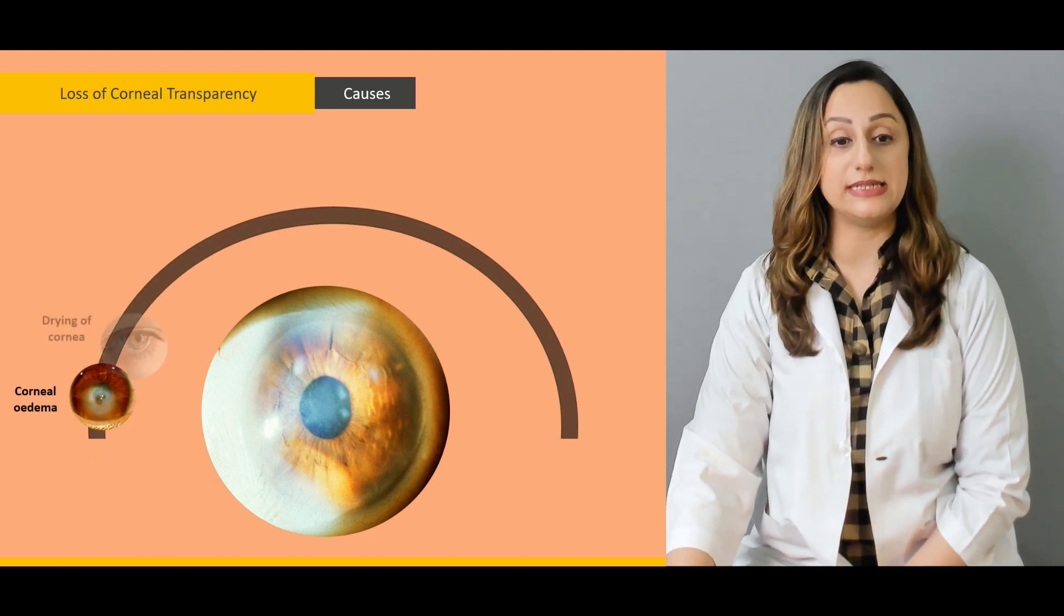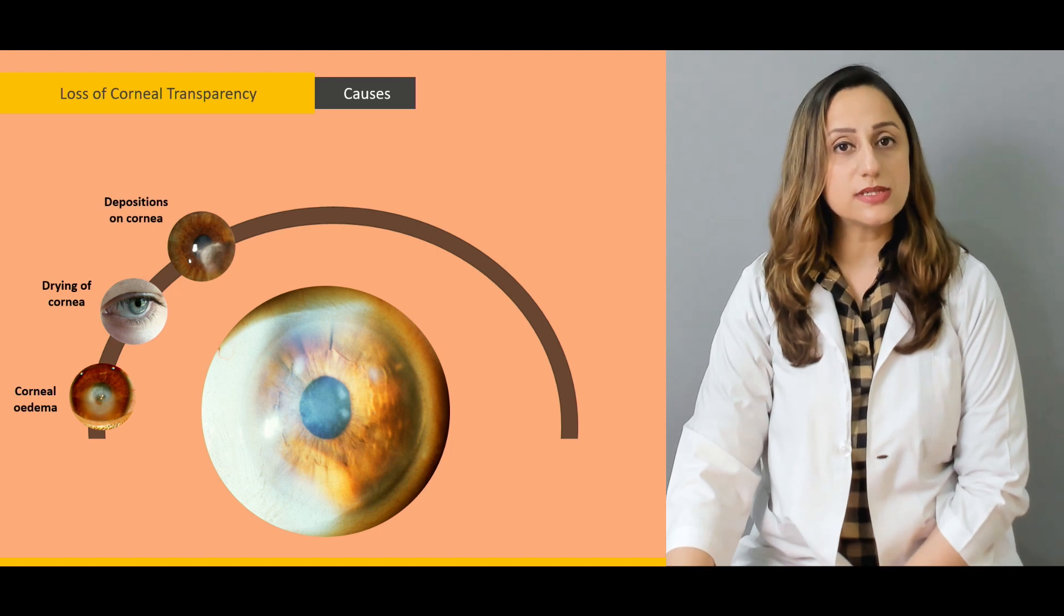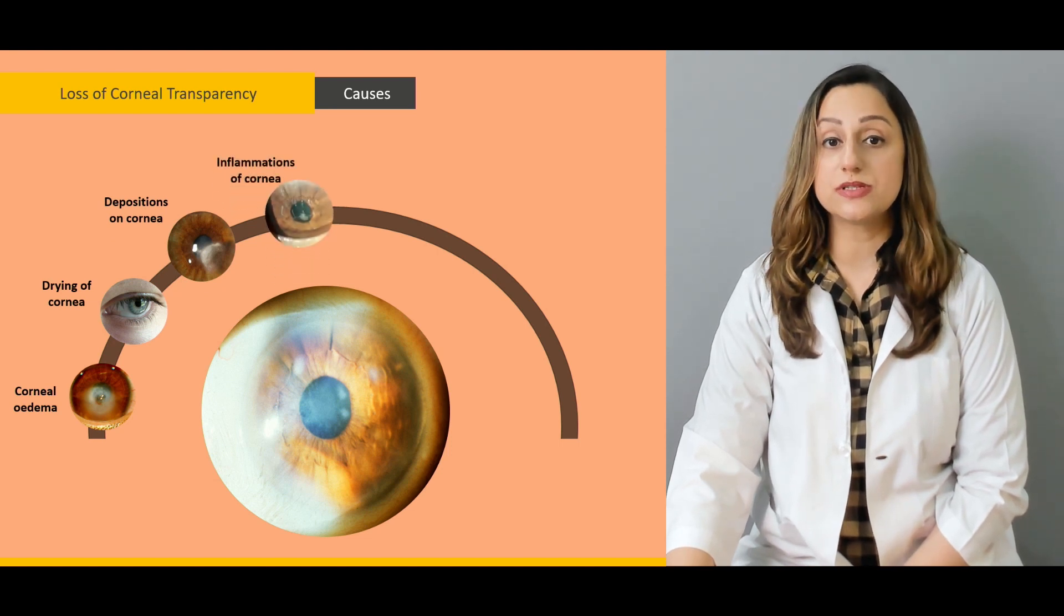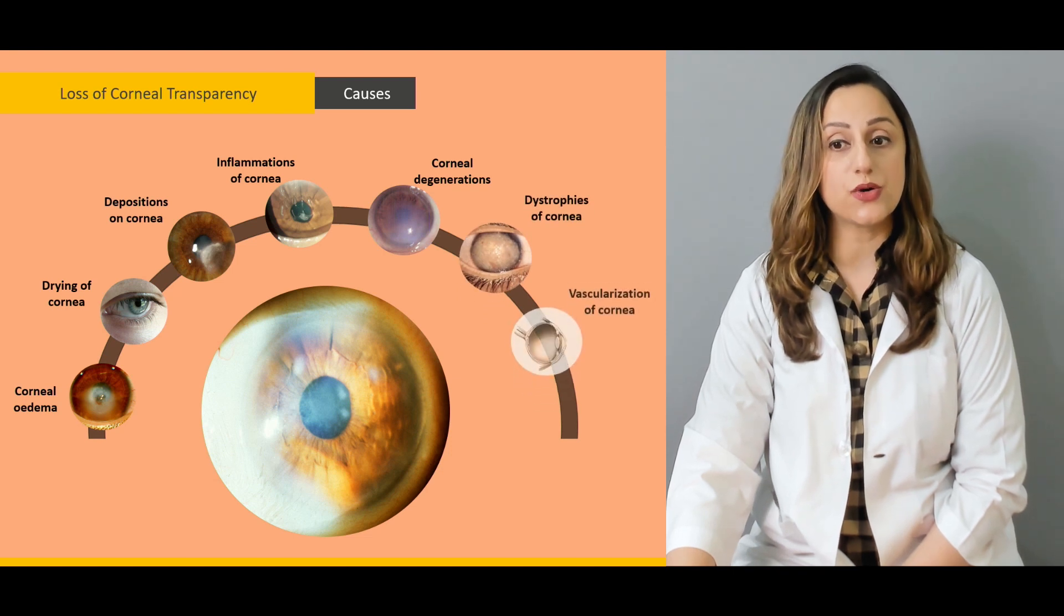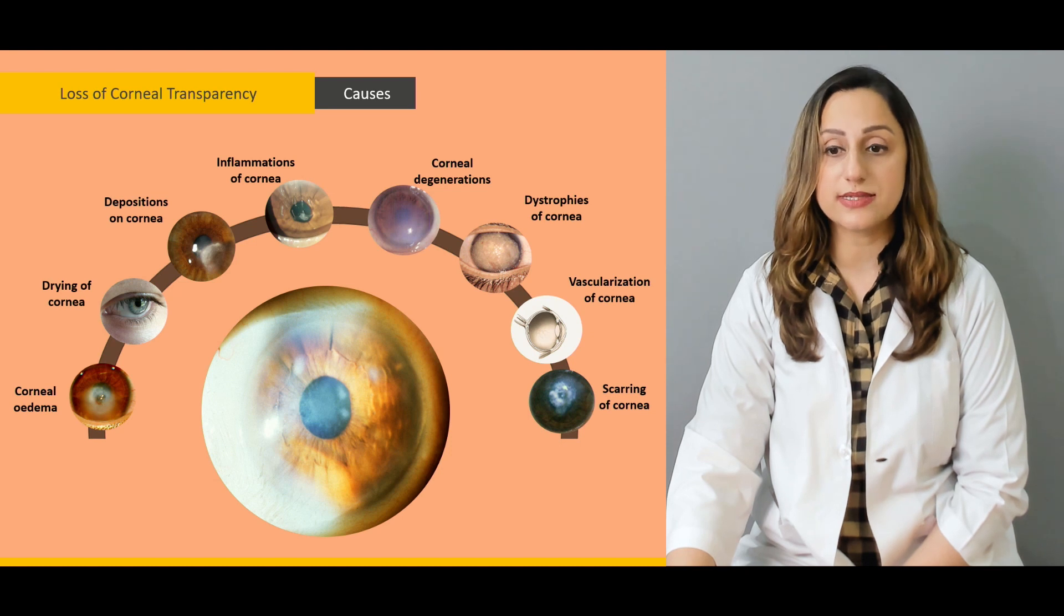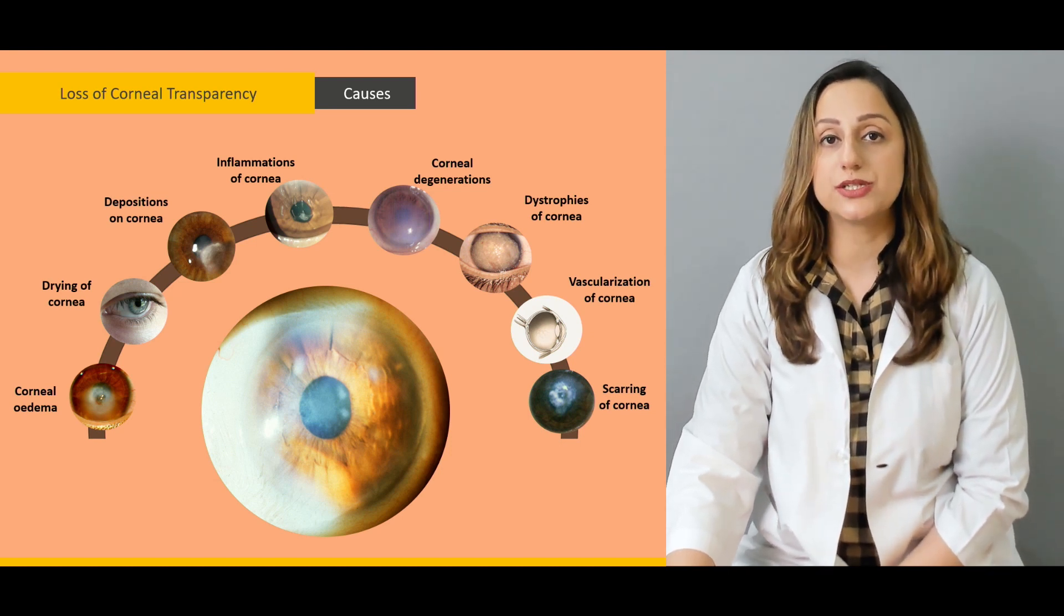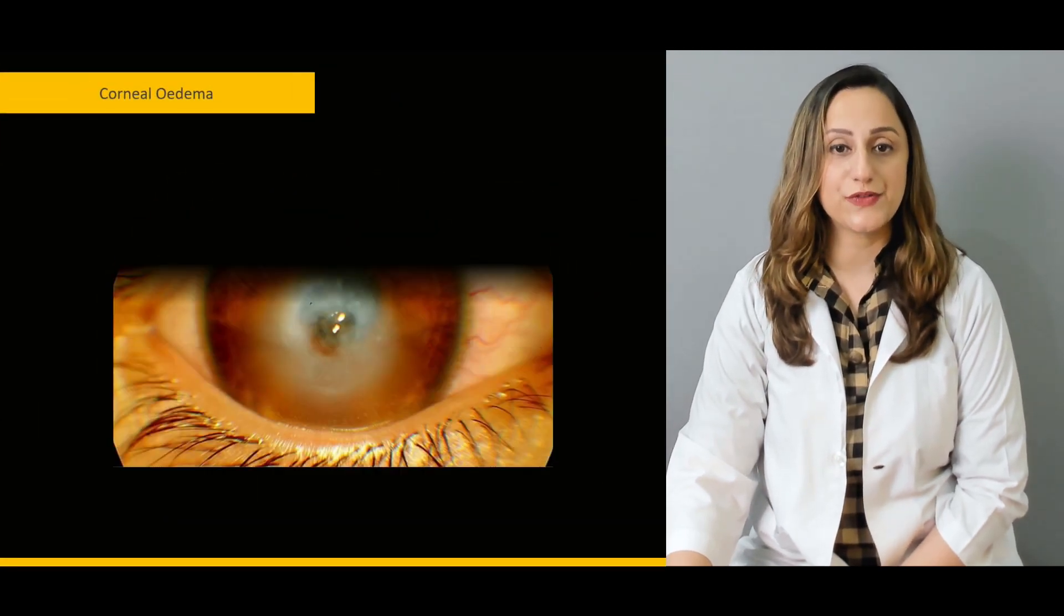It can be corneal edema, dryness of the cornea, depositions on the cornea, inflammations of the cornea, corneal degenerations, dystrophies relating to cornea, vascularization, neovascularization, as well as scarring which is related to traumatic conditions which can arise in the cornea.